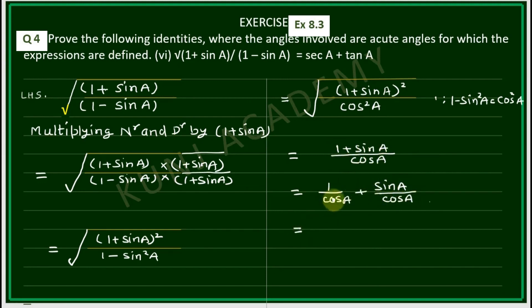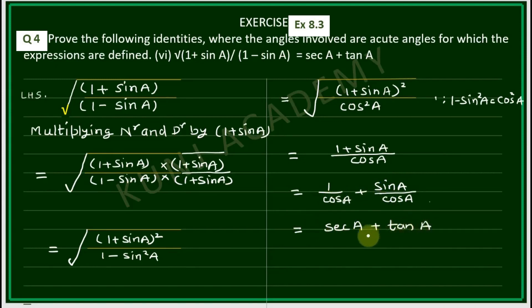This gives secA + tanA, which is equal to the right hand side. Hence proved.